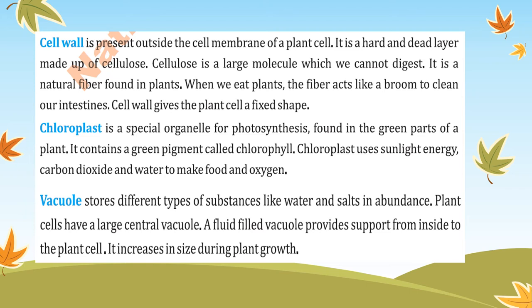The second difference is the chloroplast, present in plant cells and absent in animal cells. The green color of plants is due to the presence of chloroplasts, which contain a green pigment called chlorophyll responsible for photosynthesis. The chloroplast uses sunlight energy, carbon dioxide, and water, enabling the plant to make its own food.